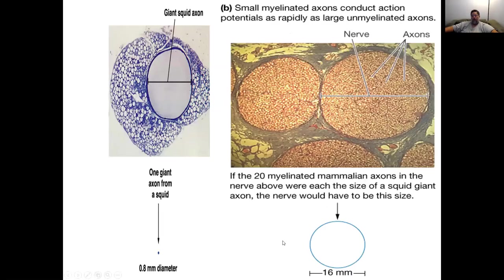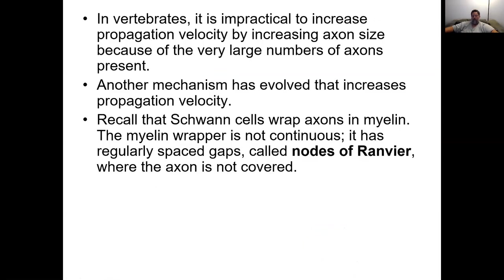Things like the squid have larger axons — one giant axon from a squid is 0.8 millimeters in diameter. Giant squids have large neurons and axons relatively speaking, dramatically larger than what we see in mammals. For invertebrates, it's impractical to increase velocity by increasing axon size because of the very large number of axons present in vertebrates. We just have lots and lots of axons, and if they were all the size of what we see in a squid, it would just be too large.